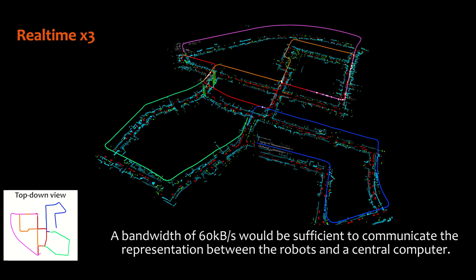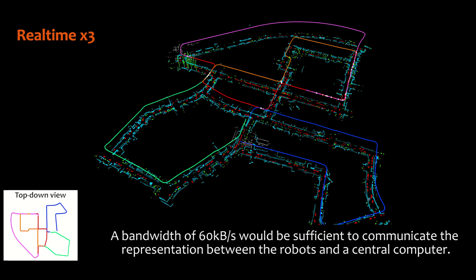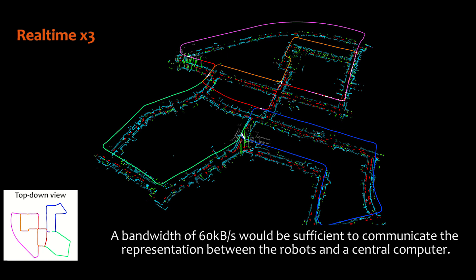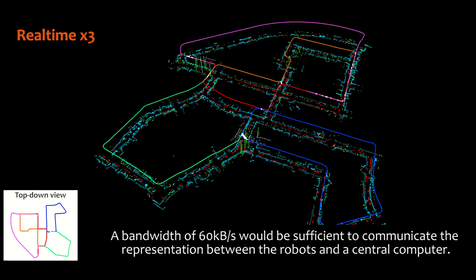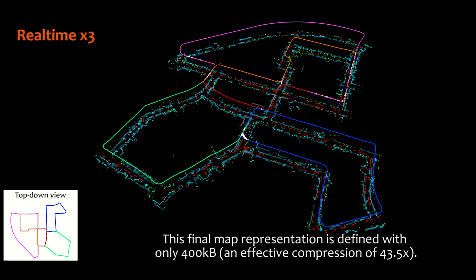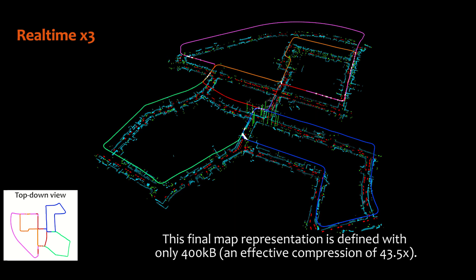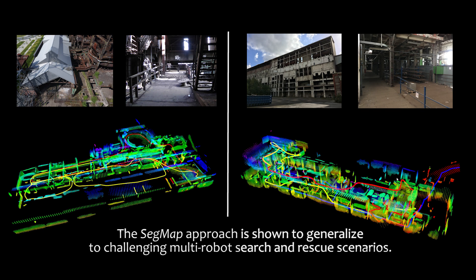A bandwidth of 60 kilobytes per second would be sufficient to communicate the representation. This final map is defined with only 400 kilobytes. The SegMap approach is shown to generalize to challenging multi-robot search and rescue scenarios. More details about these experiments can be found in our paper.